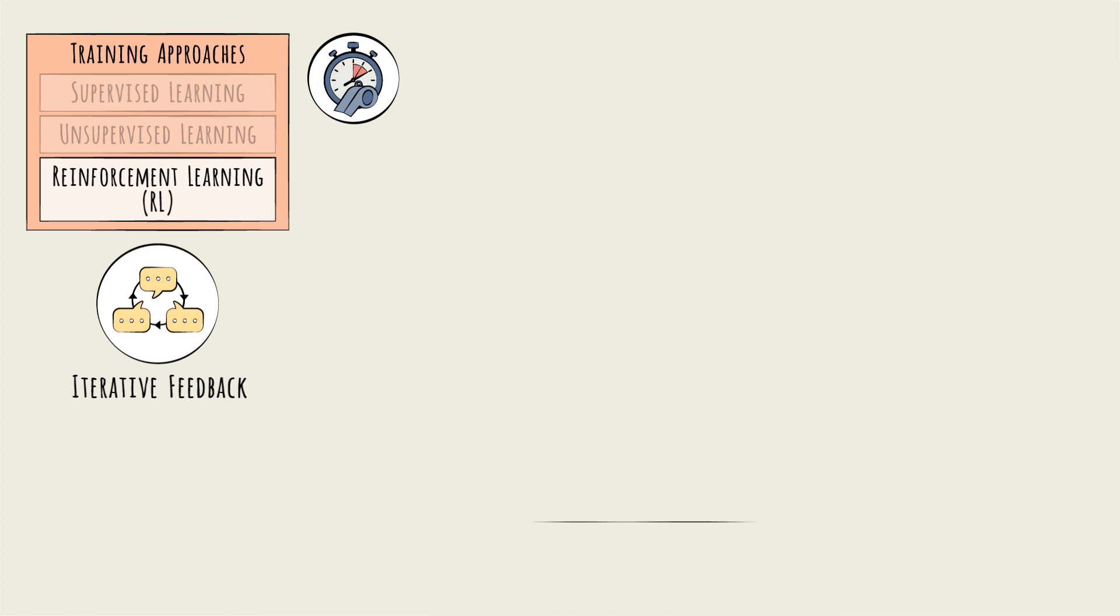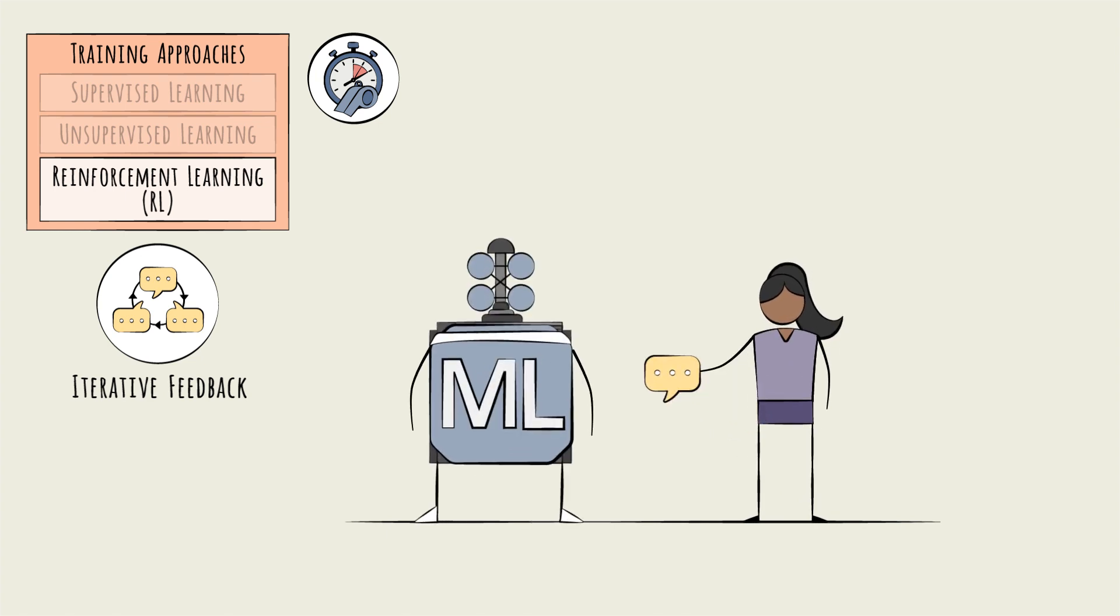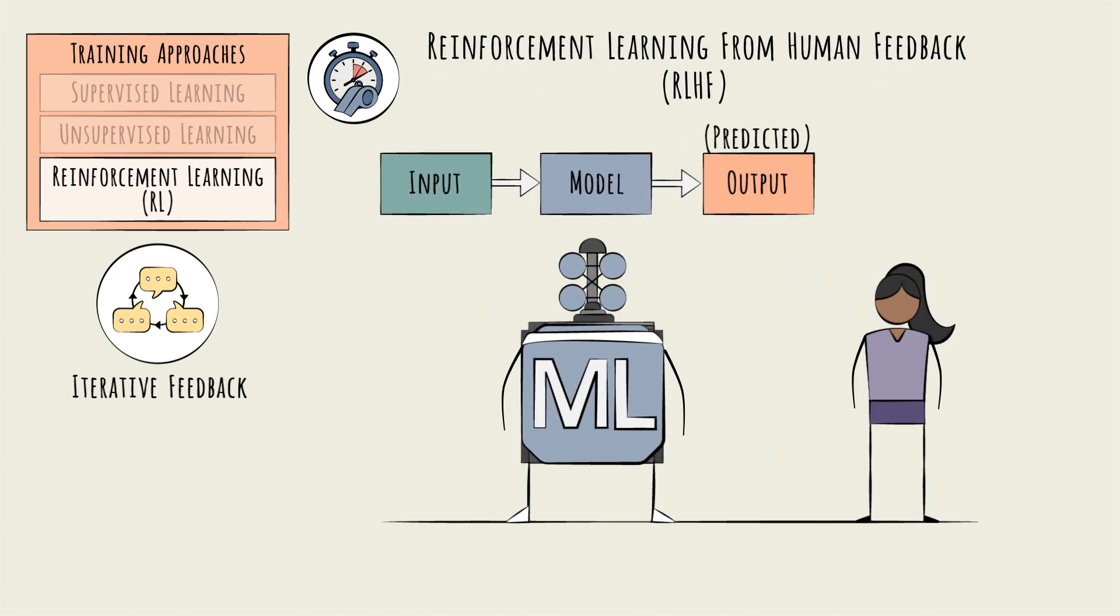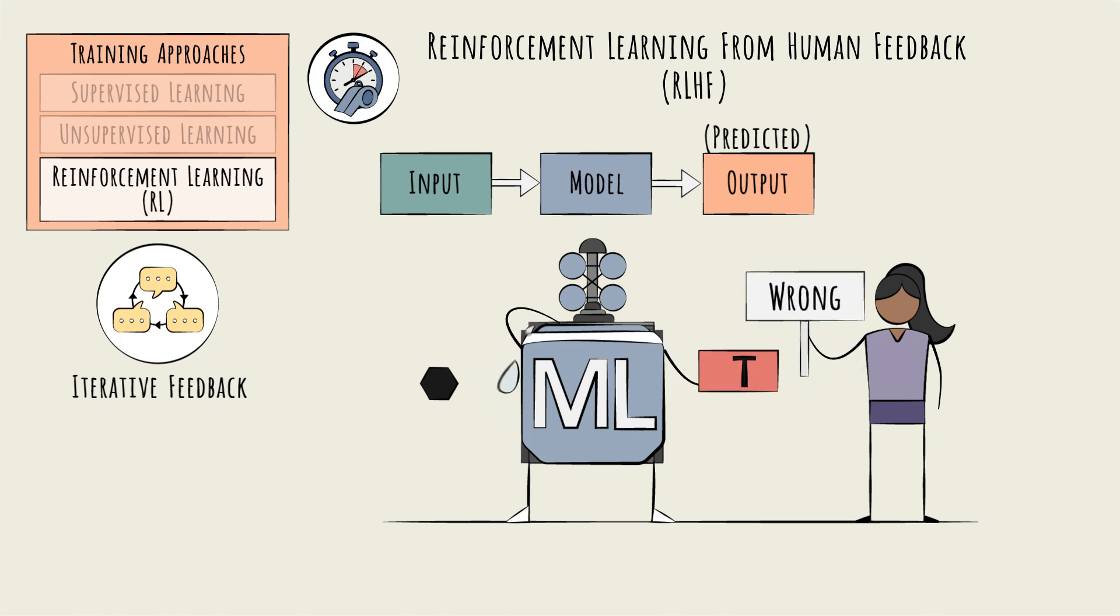In some cases, RL gets its feedback directly from human users. This is called RLHF, for reinforcement learning from human feedback. RLHF can be used in our T, no T model. Instead of training it up front via supervised learning, it could be trained slowly via reinforcement. The model makes a guess, a human gives it feedback, and it adjusts.